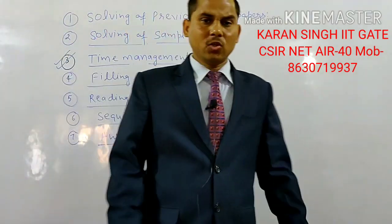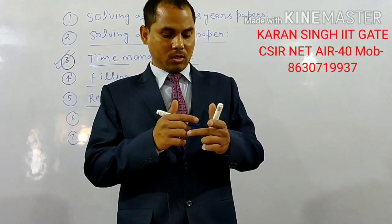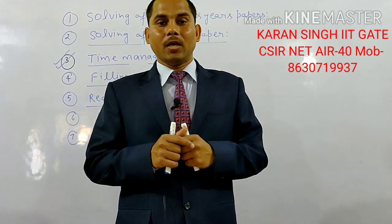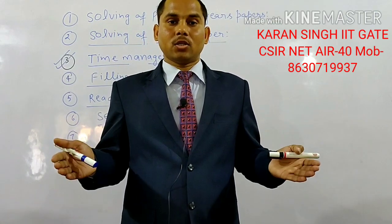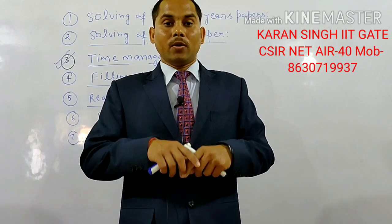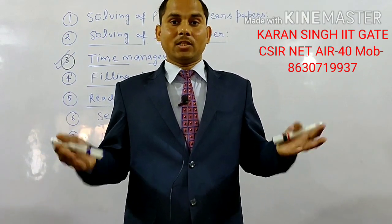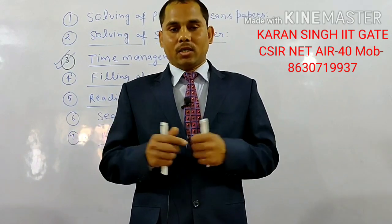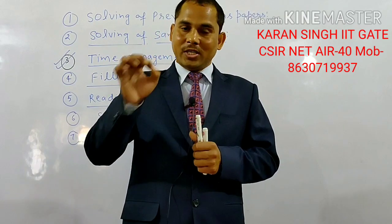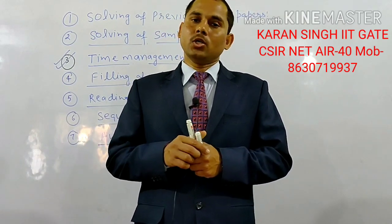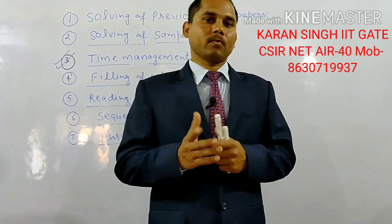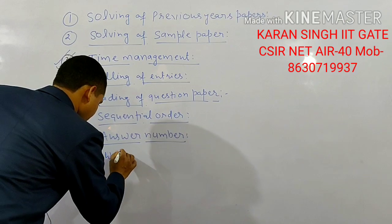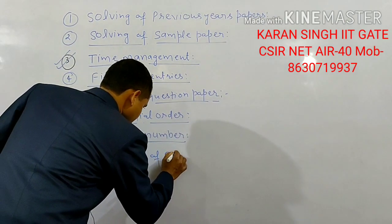Point number seven: answer numbers. It has been seen by some examiners that some students write the answers correctly and give the answers exactly, but they don't write the answer number — or they forget to write the answer number. This is a very critical situation, because in this case your answer may be rejected. So please, students, check carefully that each and every answer number is mentioned in your answer book.